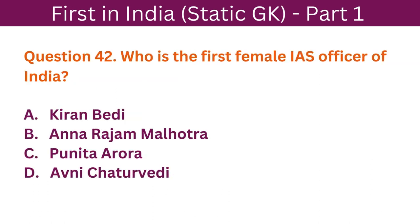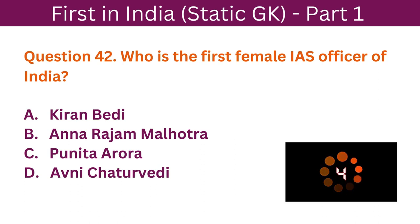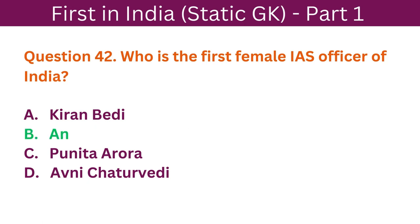Question 42: Who is the first female IAS officer of India? A. Kiran Bedi. B. Anna Rajam Malhotra. C. Punita Arora. D. Avni Chaturvedi. The correct answer is B. Anna Rajam Malhotra.